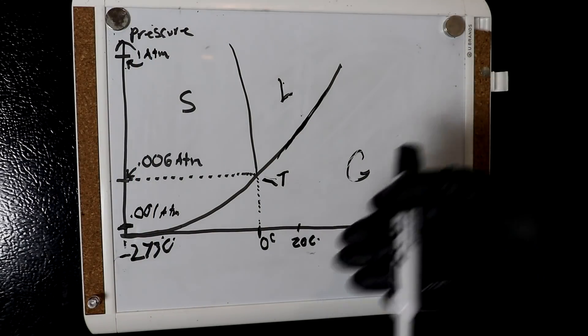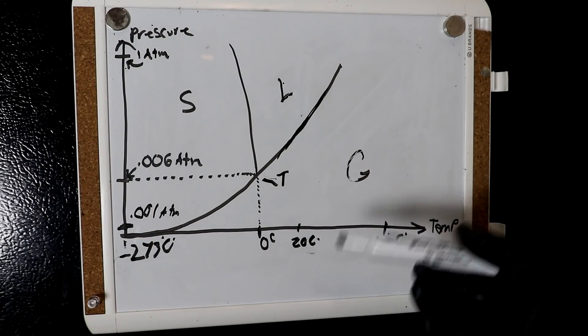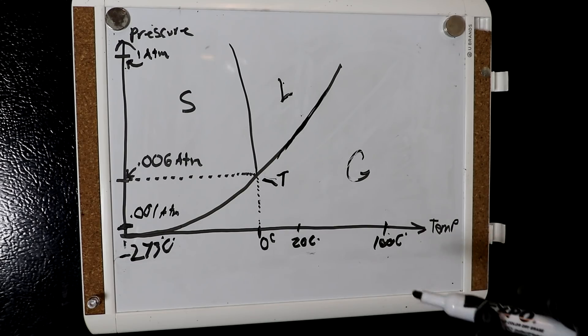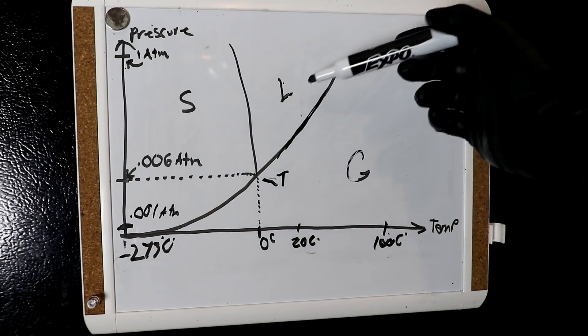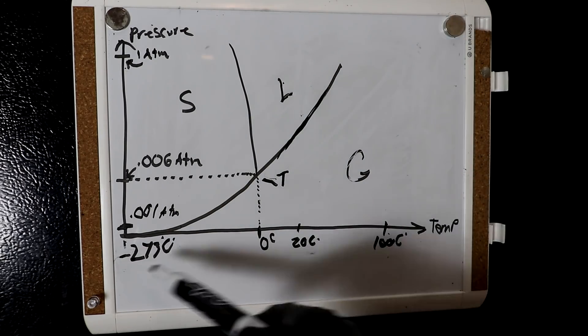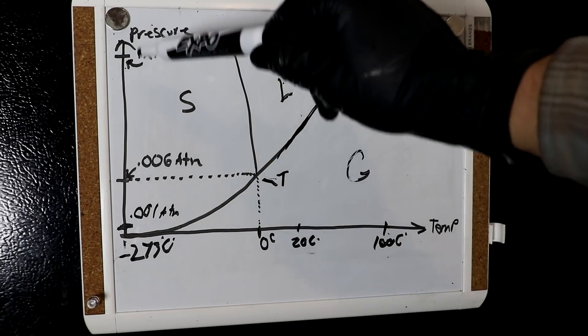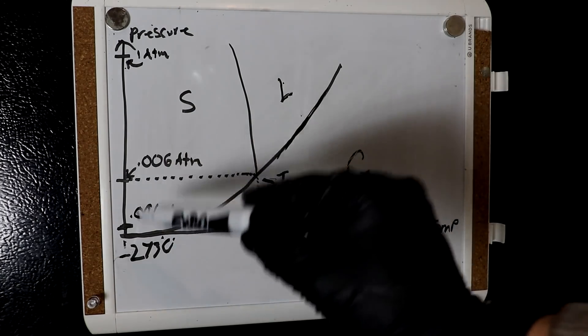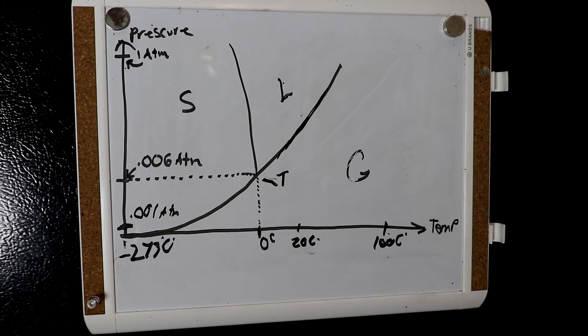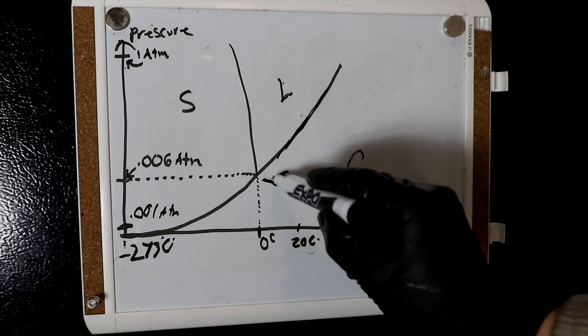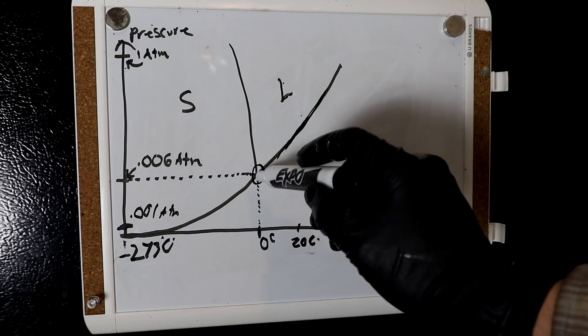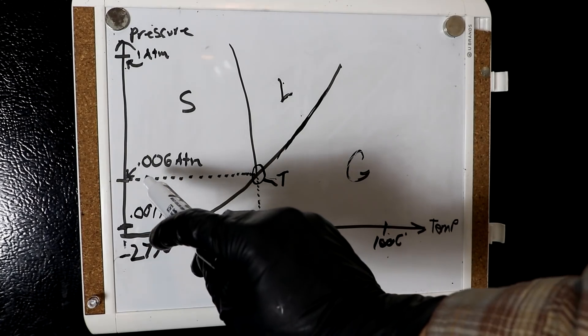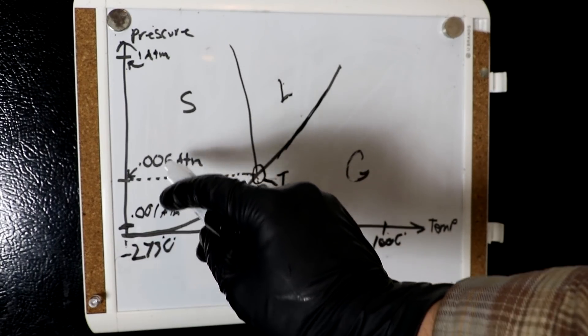Okay, so here is my rough phase diagram for water. If you've done much chemistry, you've probably seen this or something like it. We've got gas, liquid, and solid here - ice, water, steam. Increasing temperature across the bottom, increasing pressure across the side. And I've got a few key temperatures and pressures marked. This here, where all three phases coexist, that is the triple point. That occurs at six-thousandth of a standard atmosphere.